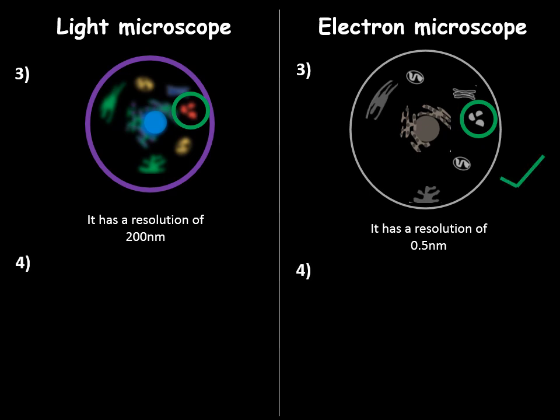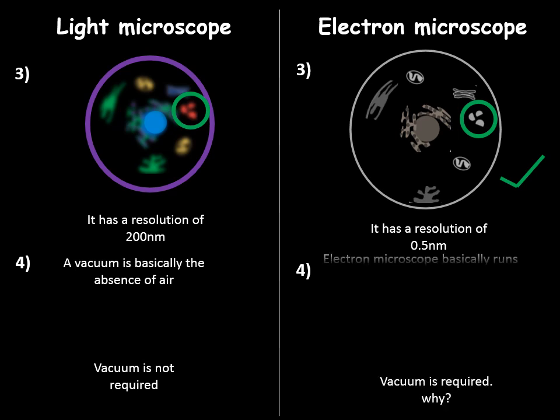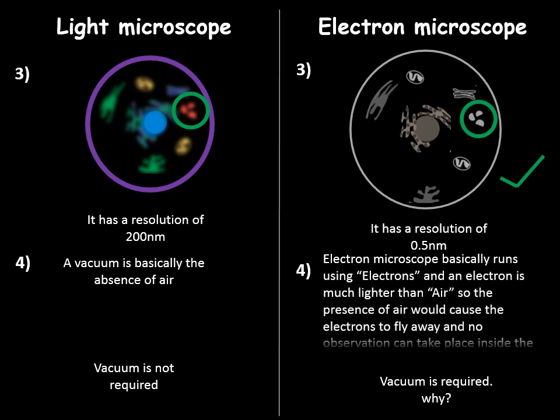Now light microscope does not require vacuum. Vacuum is basically the absence of air. But an electron microscope requires vacuum, since it operates using electrons. And electrons are lighter than air, so we don't want the electrons to fly away.